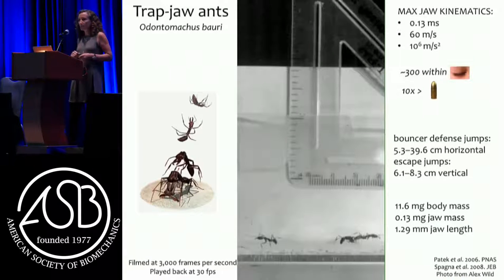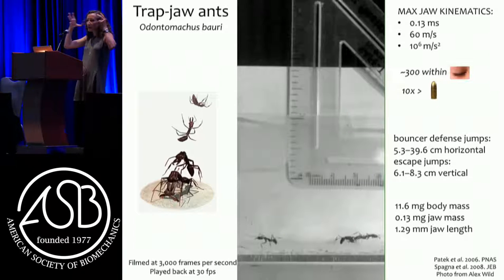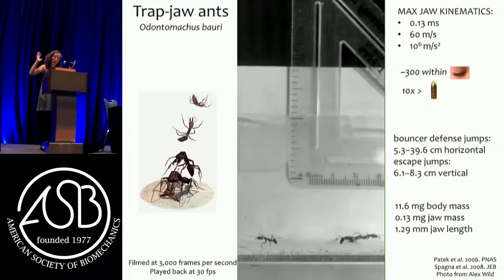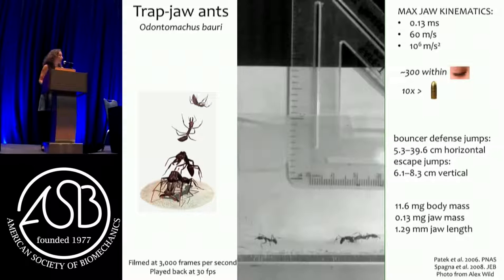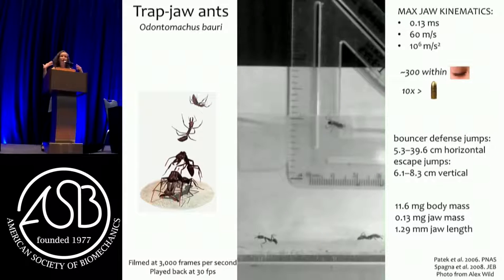One system we've worked on in my lab is trap jaw ants. These animals are about a centimeter long; they have big force-modified muscles that contract and store elastic energy, and the latch releases and the jaws slam closed. These jaws move at ten times the acceleration of a bullet — about 300 of them will fit within an eye blink, so ten to the sixth meters per second squared. They slam their jaws closed to capture prey, but they also jump. This is a video slowed down of an ant jumping with its jaws.